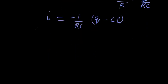And now here i can be written as what? dq over dt. As simple as that. Equals minus one over rc times q minus ce.